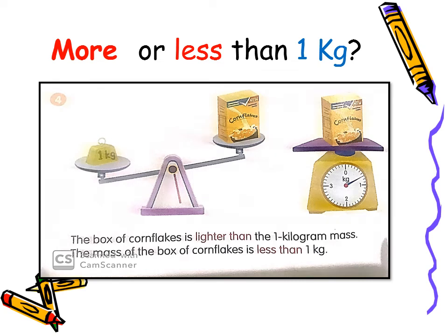Now, in this picture, we measure the mass of the box of cornflakes. On the balance, the box of cornflakes is up, which means the cornflakes are lighter, or we can say it is less than one kg. Also on the scale, the marking does not touch the one, which means the cornflakes are less than one kg.